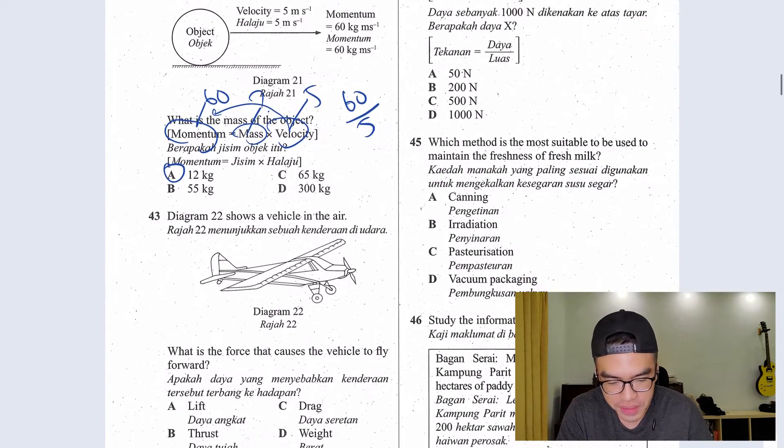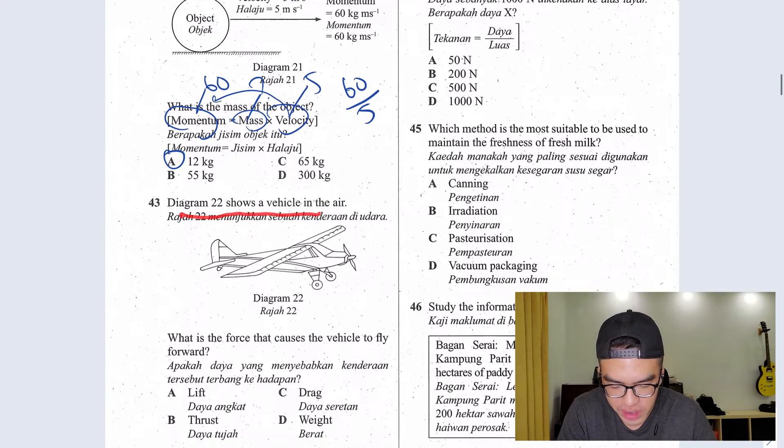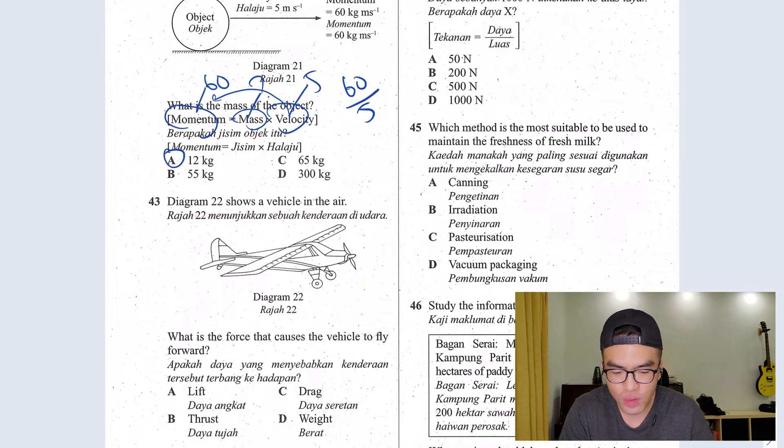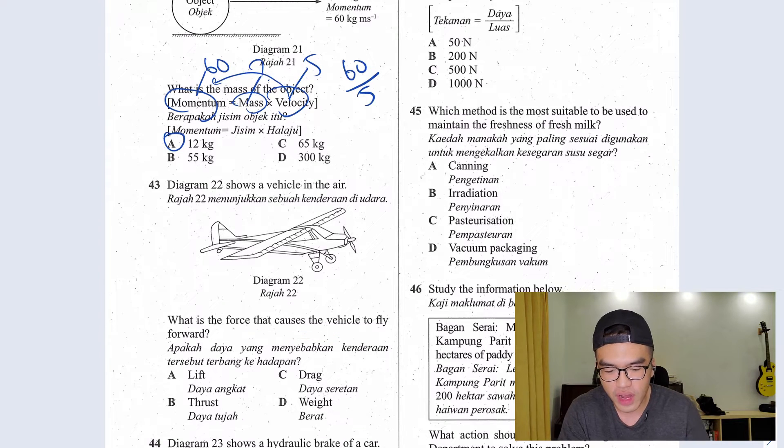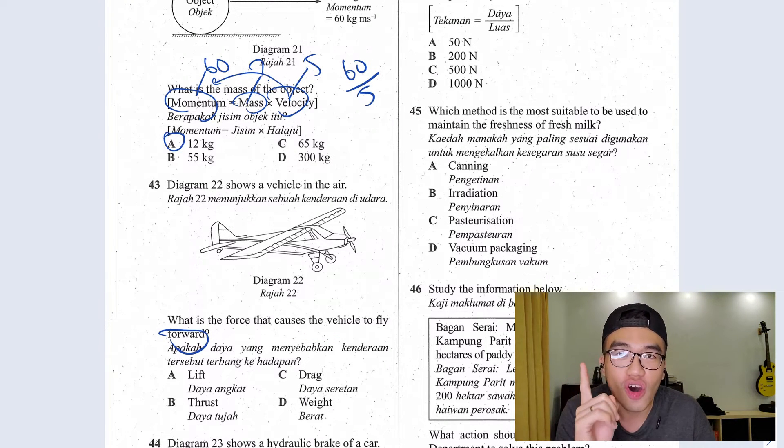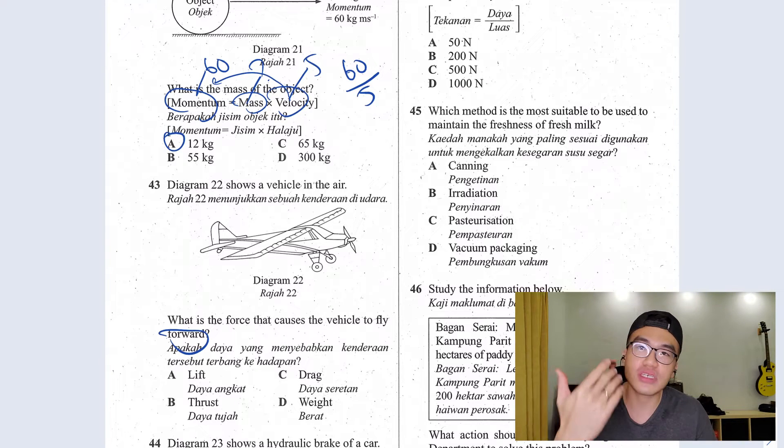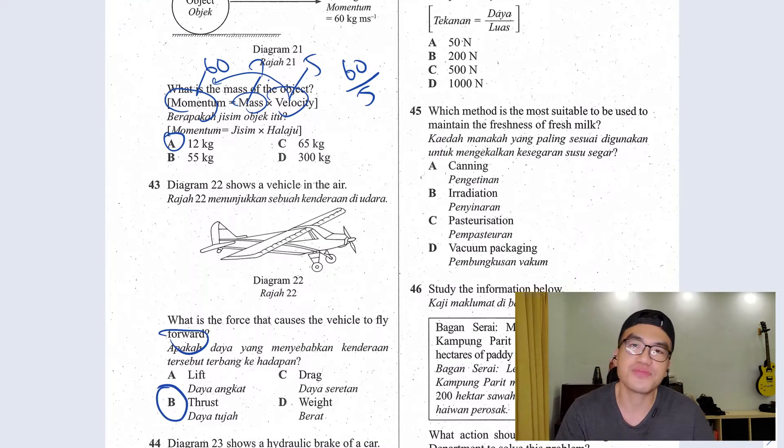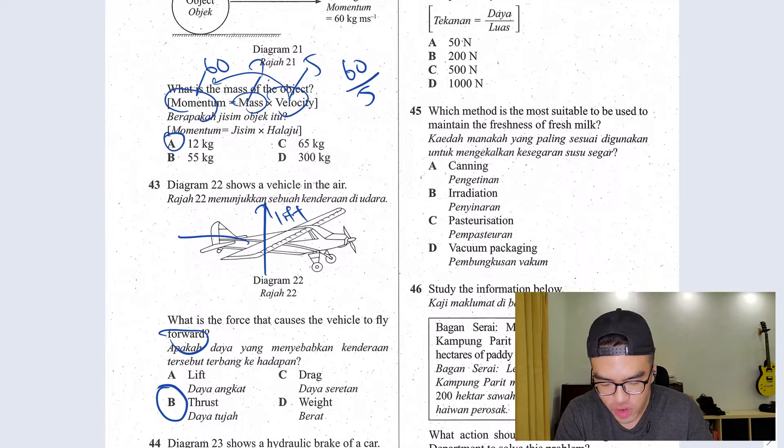Question 43. Diagram 22 shows a vehicle in the air, so you have a plane here. What is the force that caused the vehicle to fly forward? Take note, they're asking for forward, not upward. Forward force is what we know as thrust. Lift is going up, drag is going back, weight is going down.